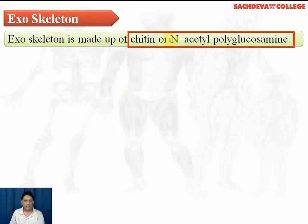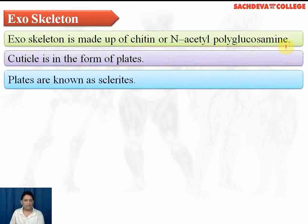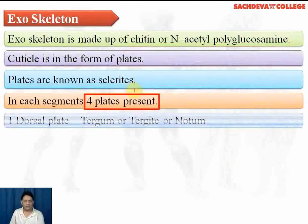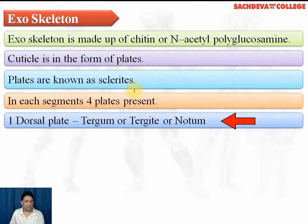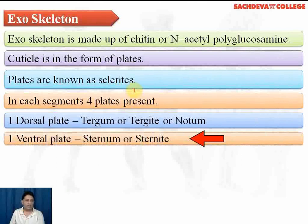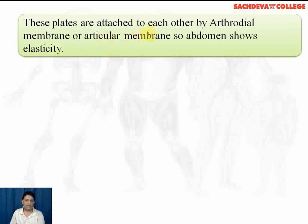The exoskeleton is made up of chitin, or N-acetyl polyglucosamine. The cuticle is in the form of plates called sclerites. In each segment, 4 plates are present: one dorsal plate known as the tergum or tergite (also called notum), one ventral plate called the sternum or sternite, and 2 lateral plates called pleura. These plates are attached to each other by the arthroidal membrane.